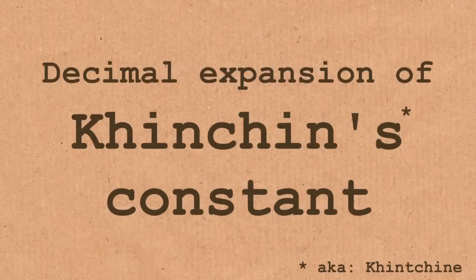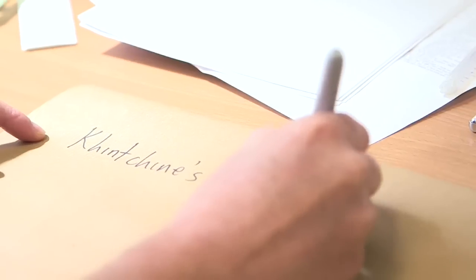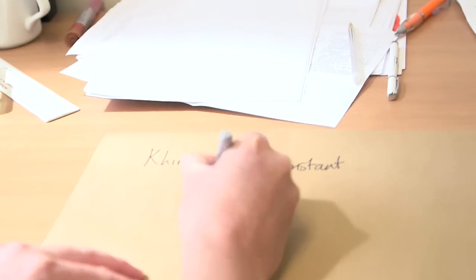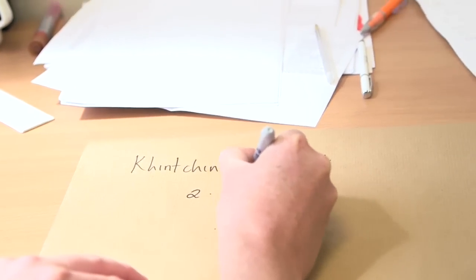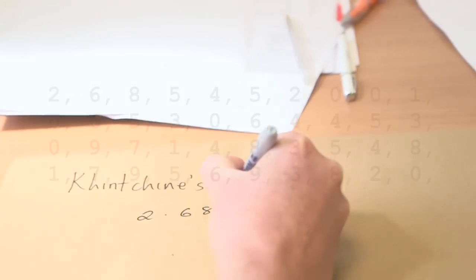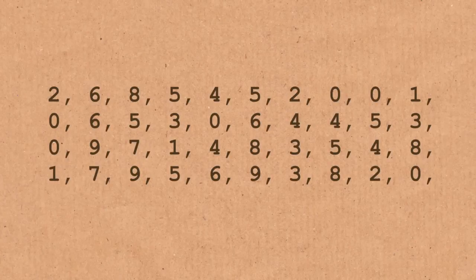I'm not going to tell you which one I like best — I'll leave that to the end and do my best poker face. The first sequence is to do with the decimal expansion of a particular constant: the decimal expansion of Khinchin's constant, which is 2.6854. Now that doesn't look very exciting just by looking at it, but Khinchin's constant is actually a remarkable number.